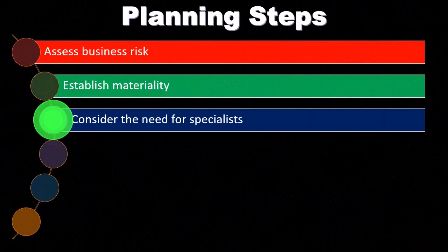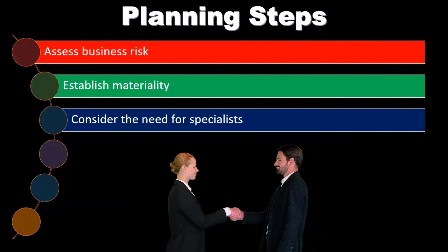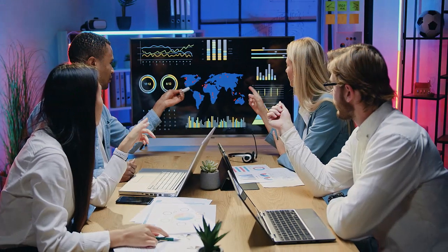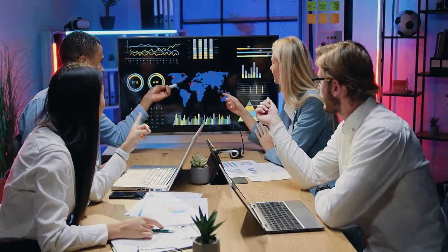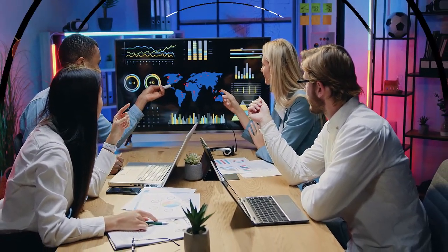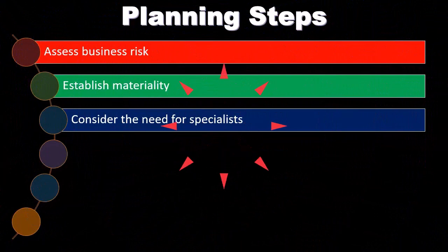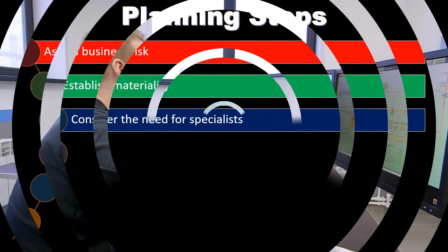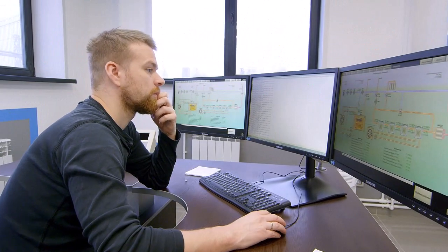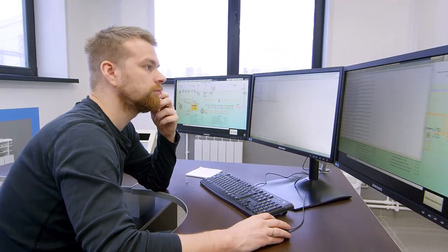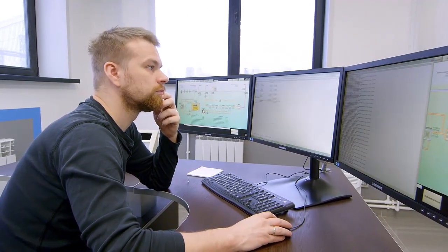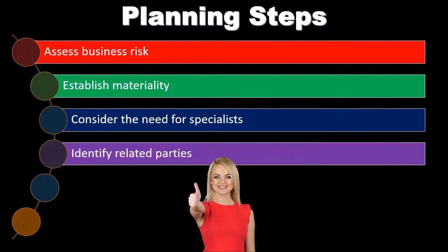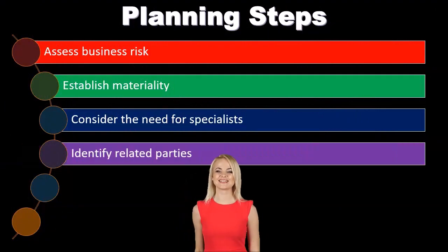Another planning step is to consider the need for specialists. We are auditors specialized in accounting, but there may also be specialists needed in areas like database and IT, or specialists to value different types of assets such as real estate or different types of inventory. We need to ensure we have those specialists available for those particular areas.